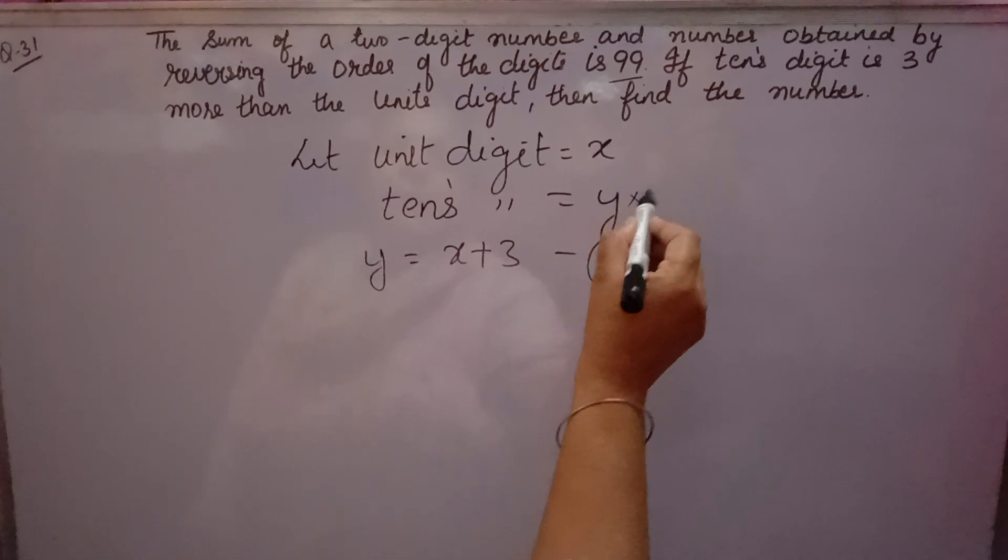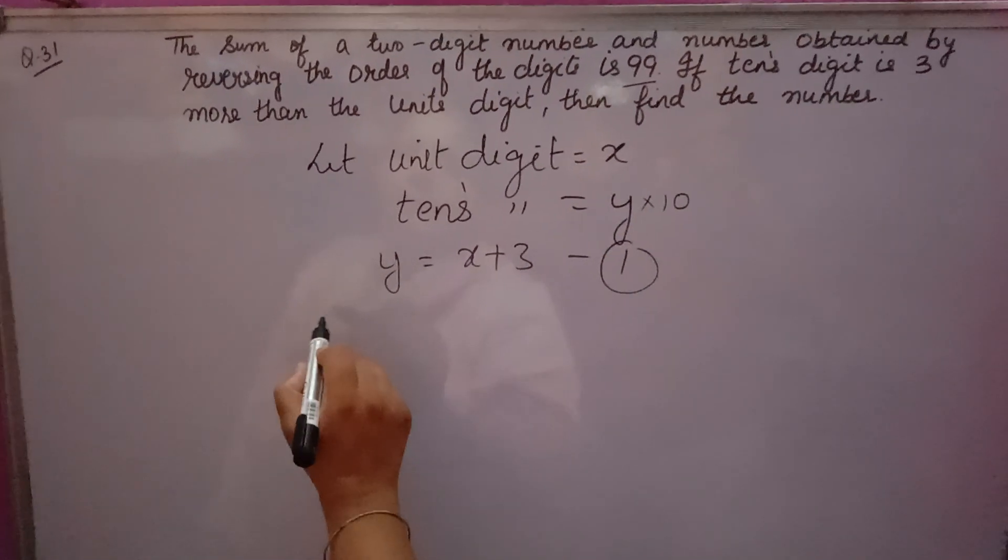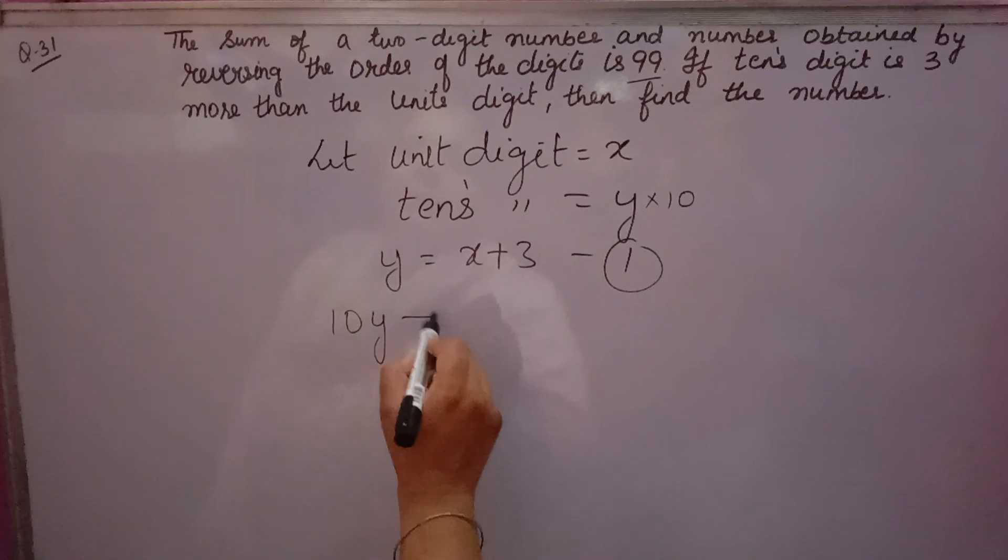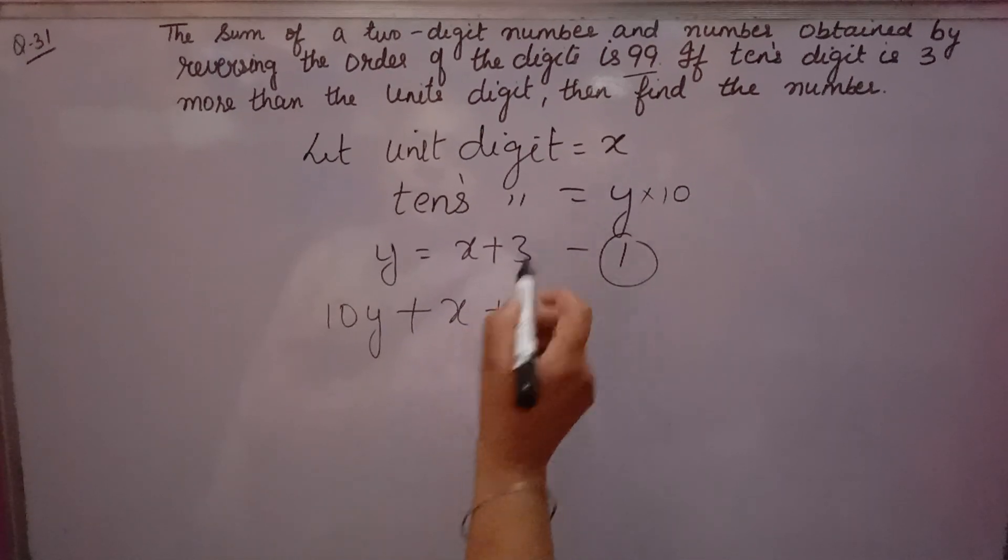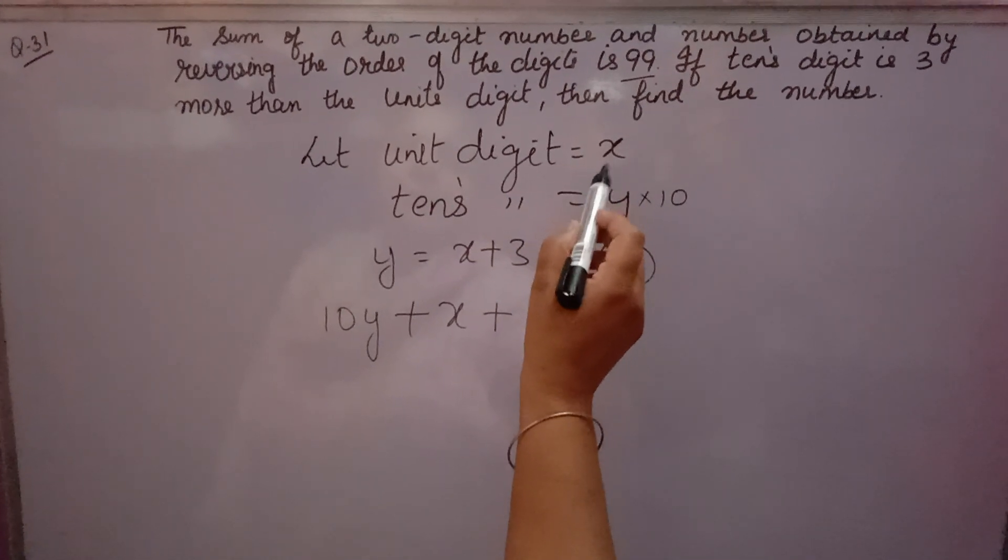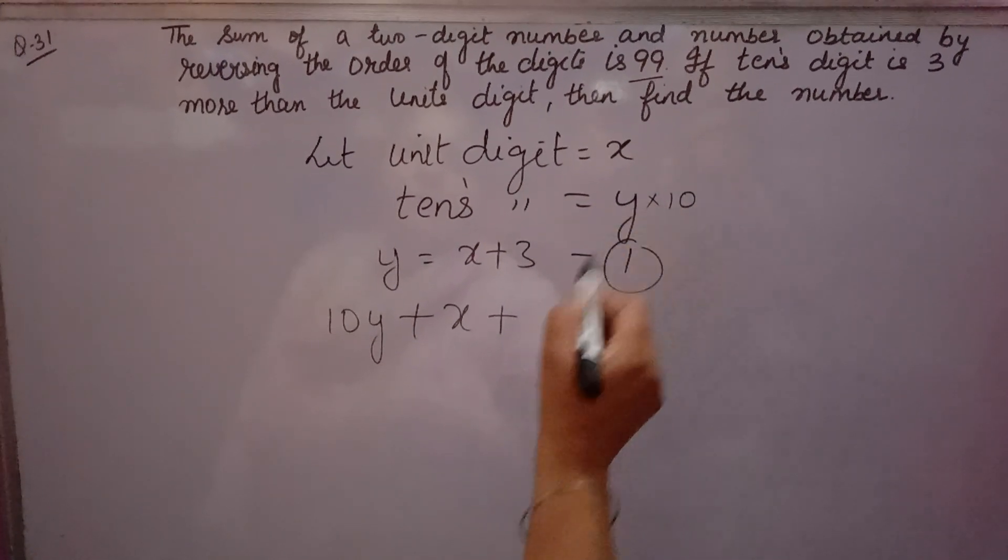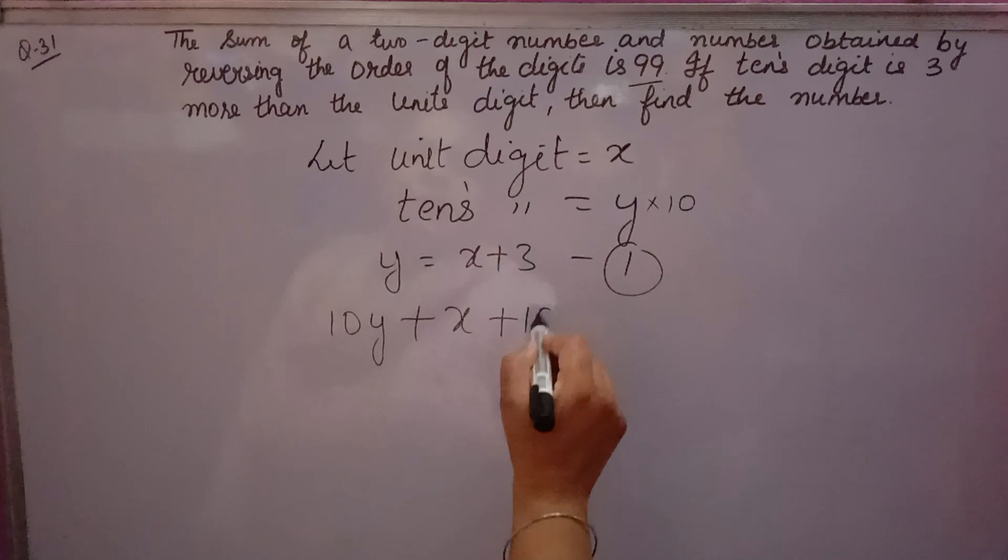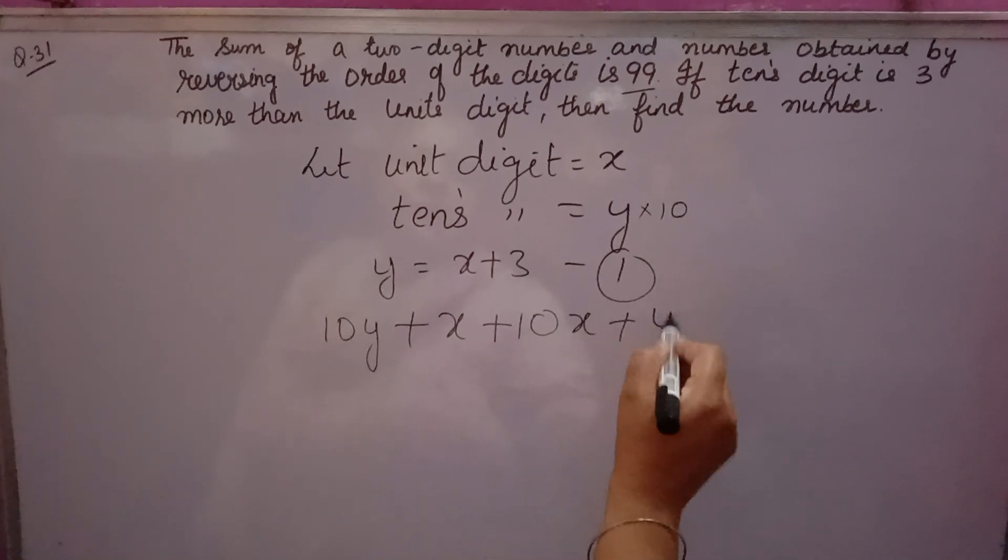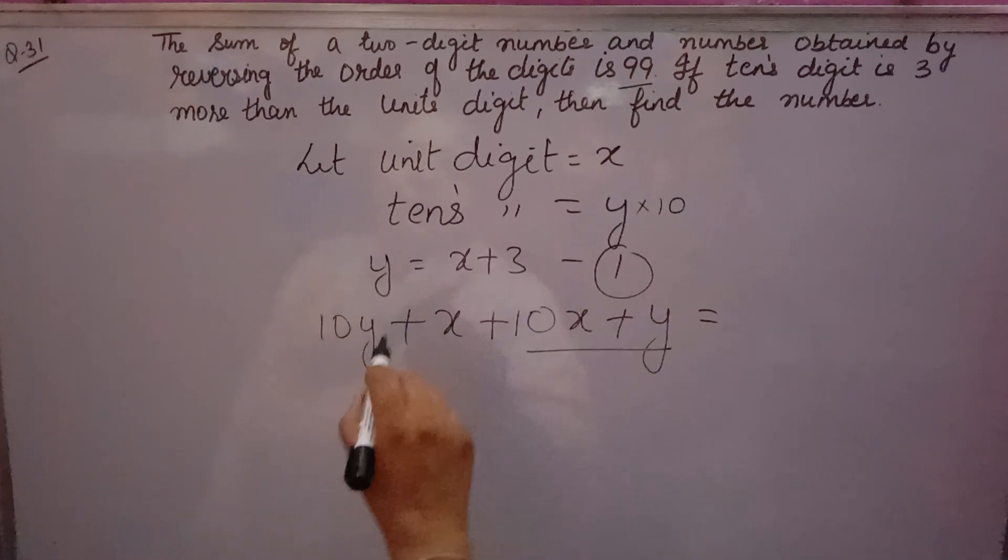Reversing the digit means the unit becomes tens and tens becomes unit, so 10x plus y. When you reverse, the unit becomes tens and tens becomes unit, meaning 10x plus y is equal to the reversed number.